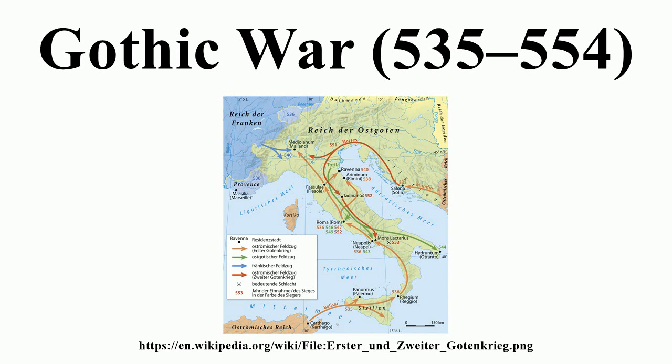It is commonly divided into two phases. The first phase lasted from 535 to 540 and ended with the fall of the Ostrogothic capital of Ravenna and the apparent reconquest of Italy by the Byzantines.